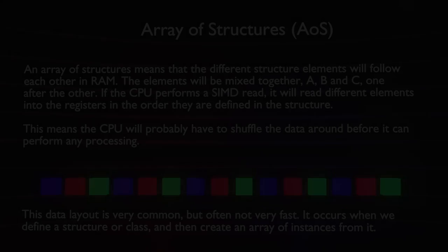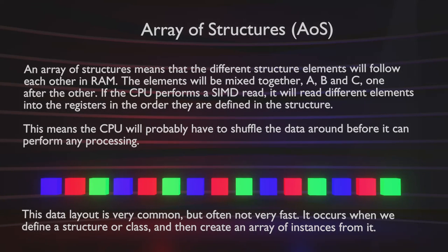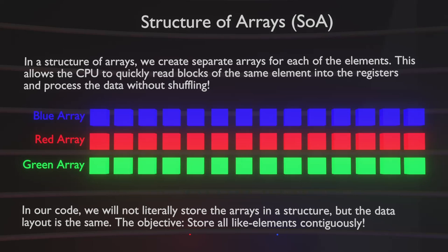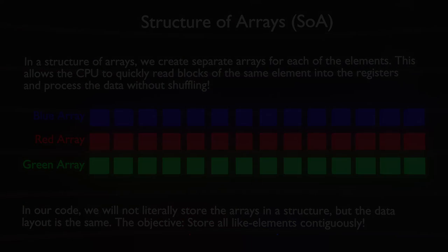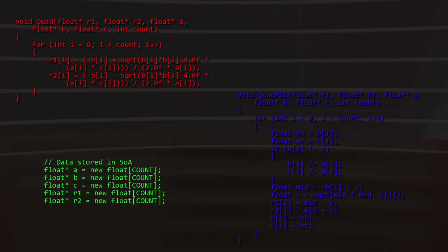Round two: we're switching the data layout. We had an array of structures, but that's often not ideal for caching and SIMD registers. Instead, we use a structure of arrays — storing all the a elements together in one array, all the b elements in another, and all the c elements in another. This lets the CPU read many elements at once and potentially vectorize the code for much faster execution. So for round two we've ditched the struct and now have a, b, c, r1, and r2 in separate arrays. Place your bets — which is faster?